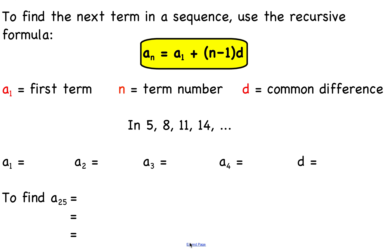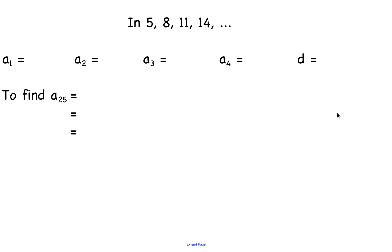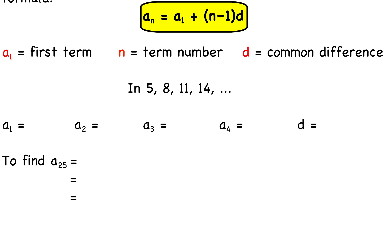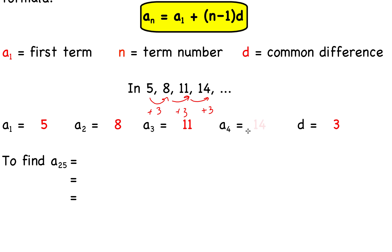Let's look at a specific example: the sequence 5, 8, 11, 14. This is an arithmetic sequence. Going from 5 to 8, 8 to 11, and 11 to 14, we're going up by 3 each time, so the common difference d is 3. A sub 1, the first term, is 5. A sub 2 is 8, the second term. A sub 3 is 11, and a sub 4 is 14.